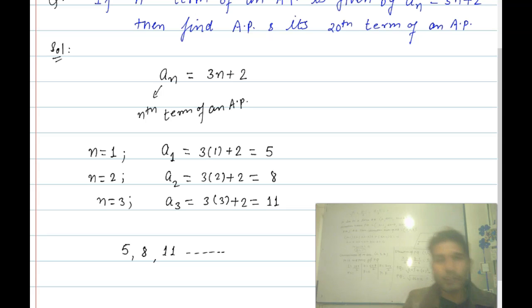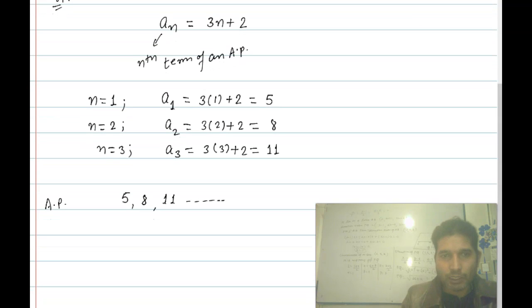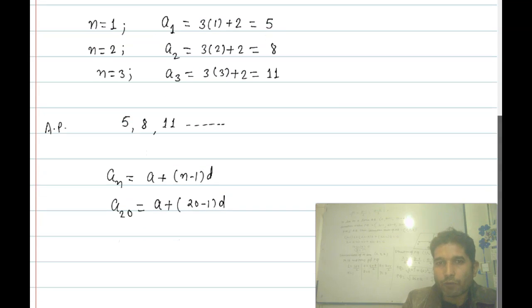Now we find the 20th term. So see, the nth term formula is a plus n minus 1 times d. We find a_20 equals a plus 20 minus 1 times d. Now a is the first term of an AP, so a is 5.